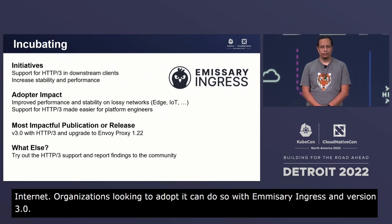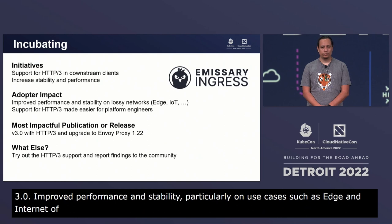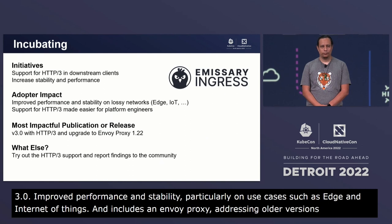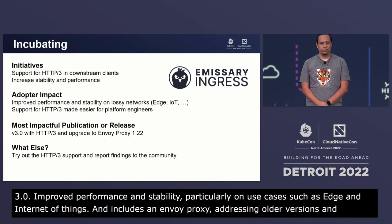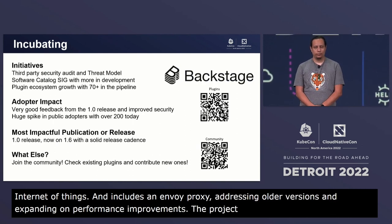Version 3.0 provides improved performance and increased stability, particularly on lossy networks and use cases such as edge and Internet of Things. Version 3.0 also provides an upgrade to Envoy Proxy 1.22, addressing CVEs in older versions and expanding on performance improvements. The project would love to see users experiment with HTTP/3 and welcomes feedback from the community.